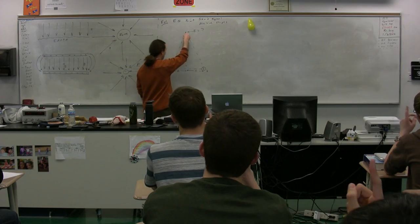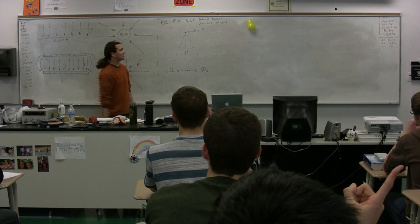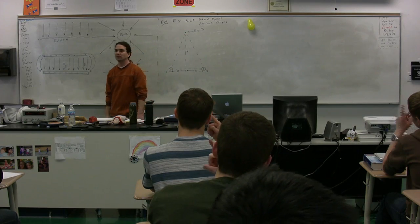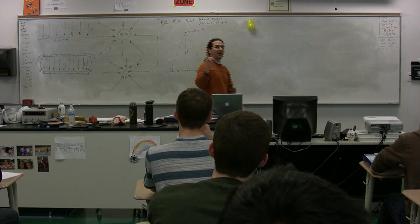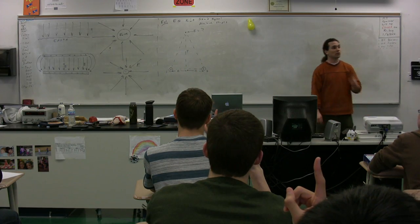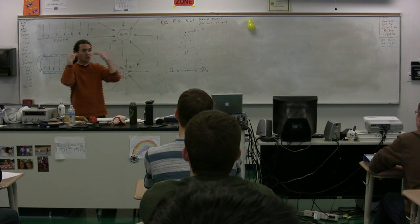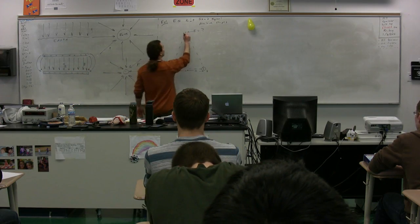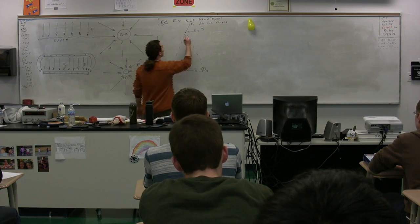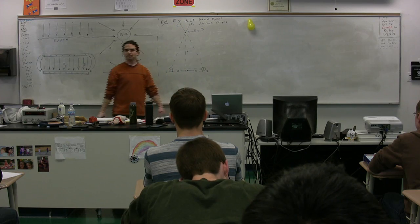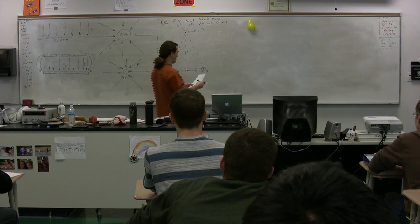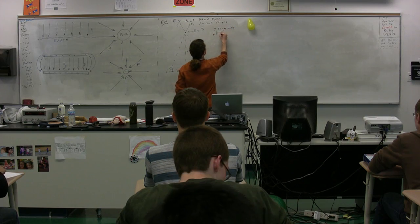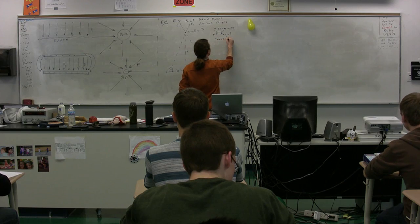Point in the direction of the electric field at this point caused by charge one — it's going to be in that direction. What is the direction of the electric field caused by charge two at this point? The direction of the net electric field due to both of them is going to be straight up. You should be able to identify that electric field one and electric field two are such that the net electric field is in the y direction, because the x components cancel out due to symmetry.